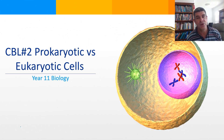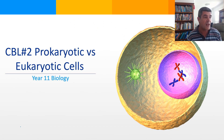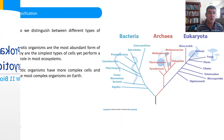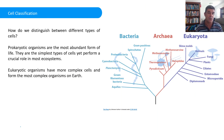Hi students, welcome to Year 11 Biology and Module 1, Cells as the Basis of Life. This is video number 2 where we look at the start of our comparison or contrast between prokaryotic cells and eukaryotic cells. Here we want to start looking at some different examples of different types of organisms and see if we can put them into some sort of categories.